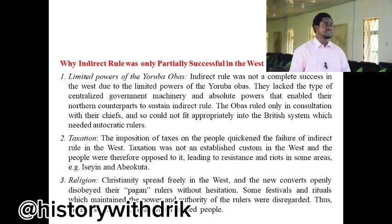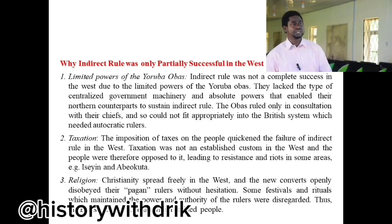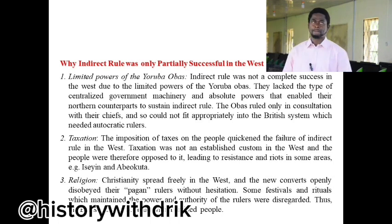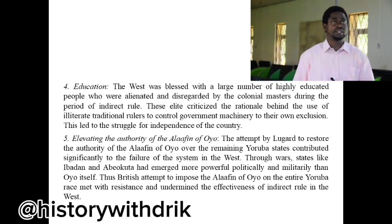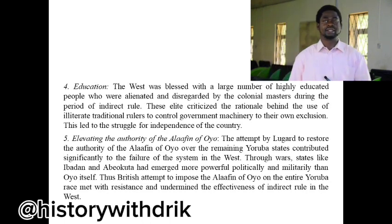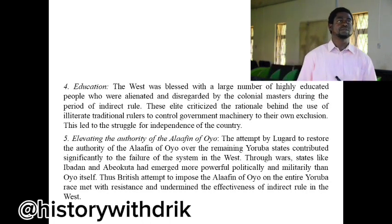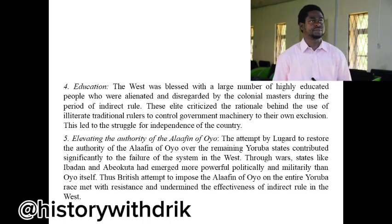Point number three was that Christianity spread freely in the West, and converts openly disobeyed their rulers. Some festivals and rituals which maintained the power and authority of the rulers were disregarded, so the British had to contend with a divided people. Point number four was education. The West was blessed with a large number of highly educated people who were alienated and disregarded by the colonial masters during the period of indirect rule. This elite criticized the use of illiterate traditional rulers to control government machinery, which led to the struggle for independence.